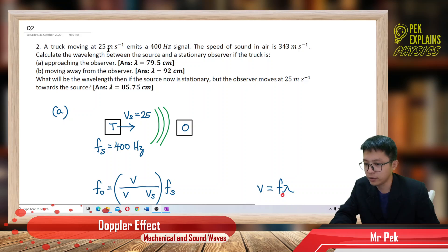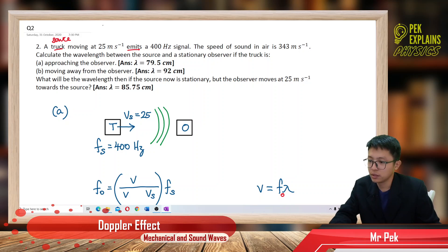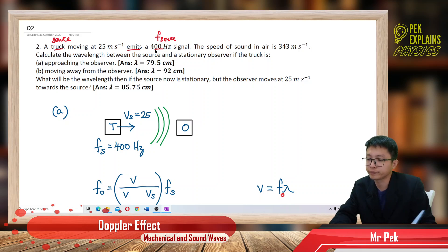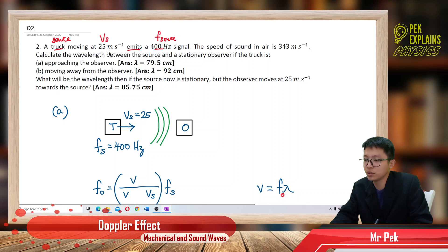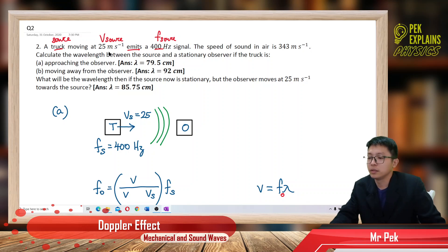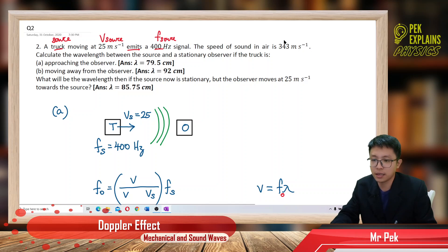Let us identify what information is given. The truck emits the sound, so the truck is the source. The 400 hertz is the frequency of the source. And 25 meters per second means the source is moving — this is the speed of the source. And 343 meters per second is the speed of sound, V.